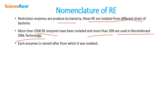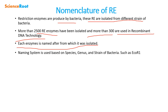Each enzyme is named after the organism from which it is isolated — the bacteria or microorganism from which it is discovered. For example, the restriction enzyme EcoRI is isolated from a strain of E. coli. The name system is based on genus, species, and strain.